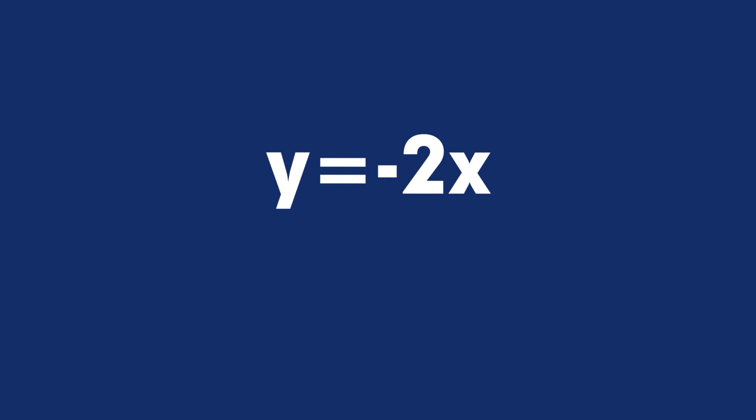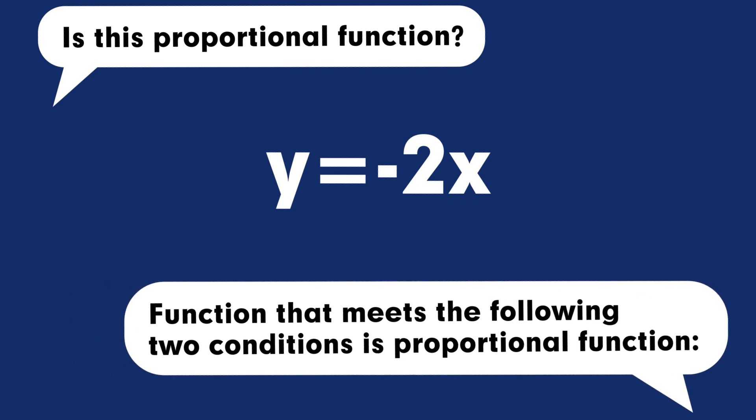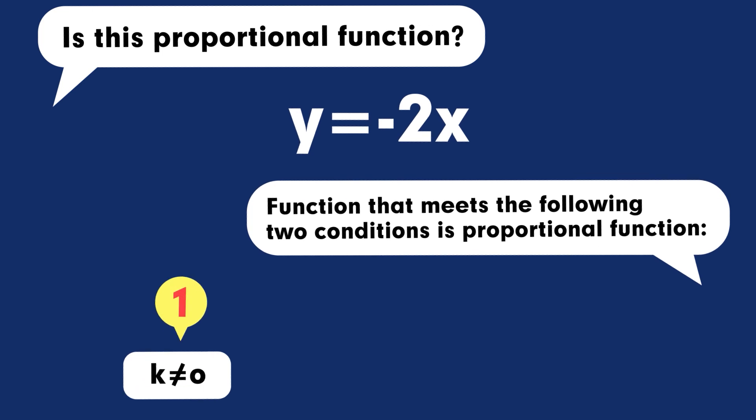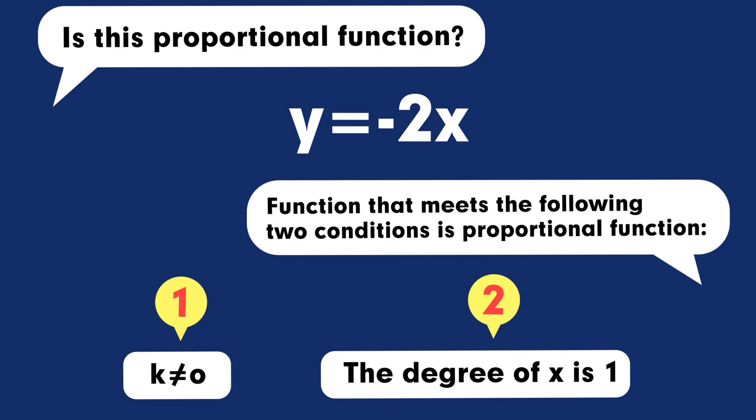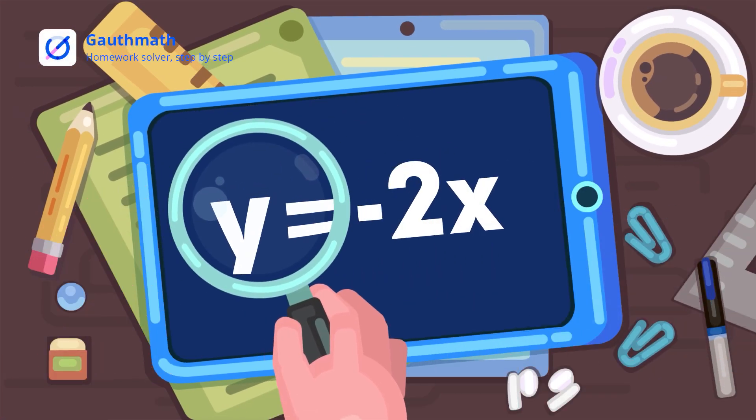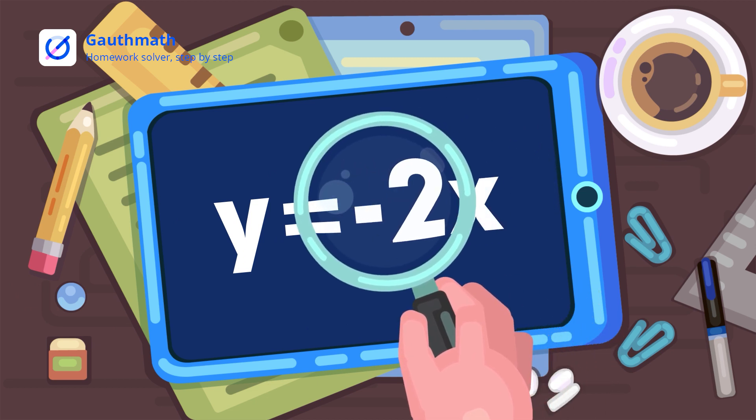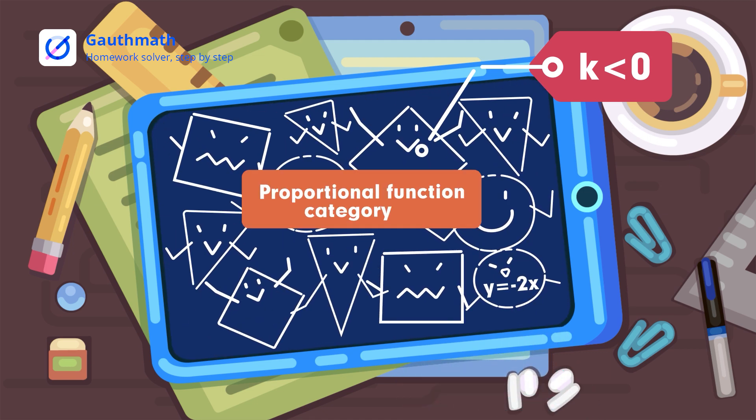Is this proportional function? A function that meets the following two conditions is a proportional function: first, K is not equal to zero; second, the degree of X is one. Let's take a closer look at Y equals negative 2X. Even though this function has a negative constant K, this function also belongs to the proportional function category.